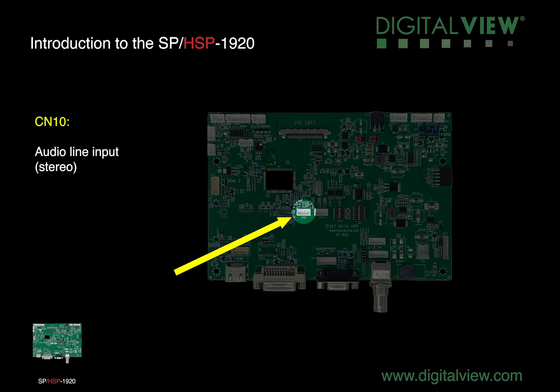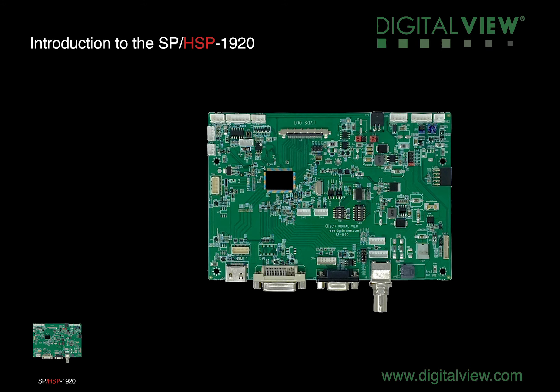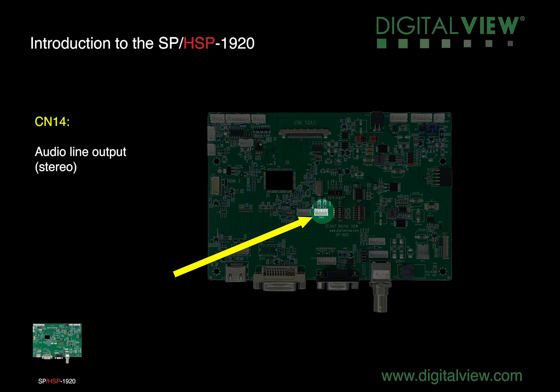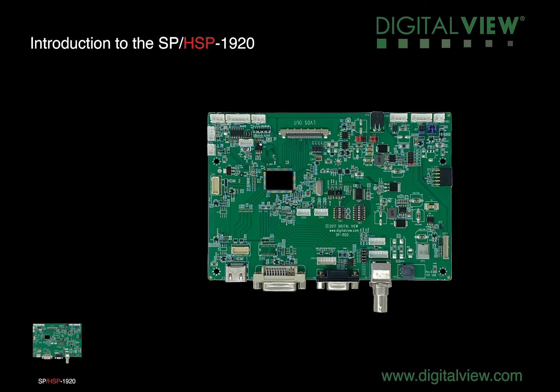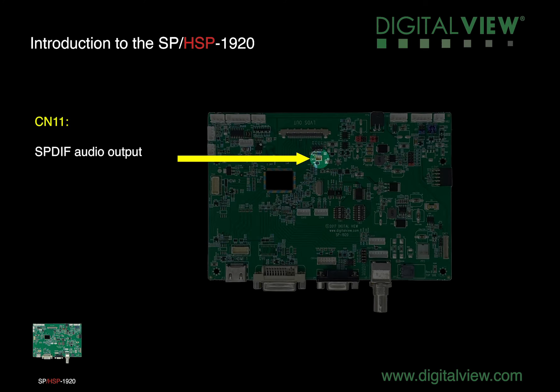CN10 is the header for the stereo audio line input. CN14 is the header for the stereo audio line output. CN11 is for the SPDIF audio output.